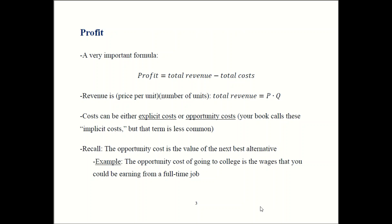Let's talk about profit. In general, profit is just total revenue minus total cost — that's how much money the firm takes in minus how much it pays out. We can rewrite total revenue as price times quantity. Recall our notation from Chapter 3: we use P for price and Q for quantity.